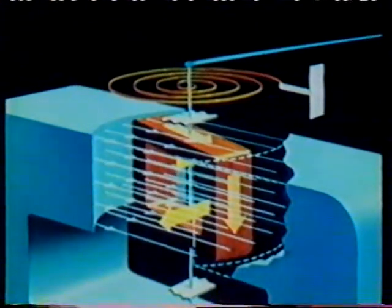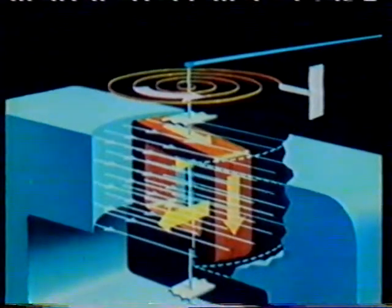If the current to be measured is passed through the coil, the magnetic field will exert a torque on it. The coil will tend to take up a position perpendicular to the lines of magnetic induction, but the tension developed in the spring limits its movement.